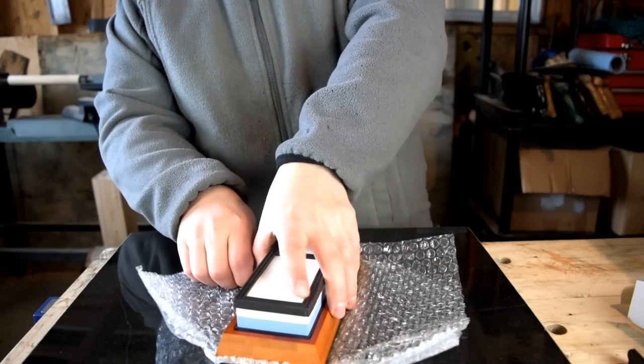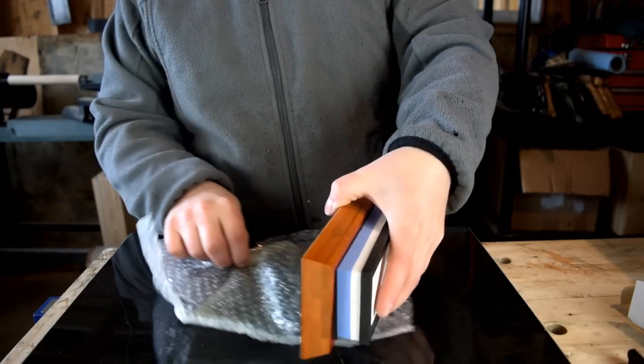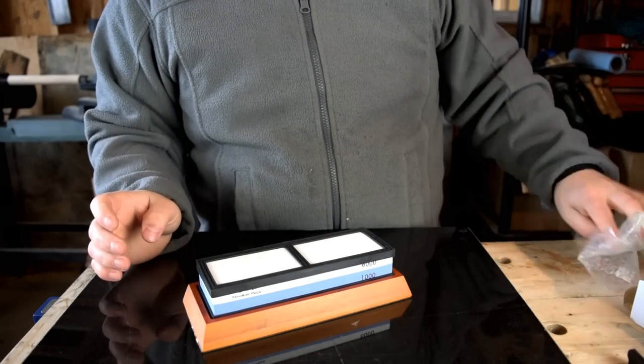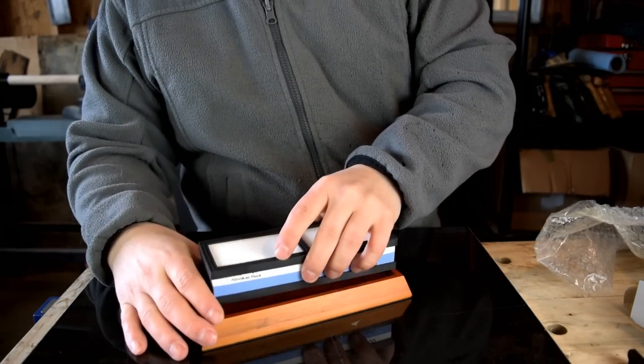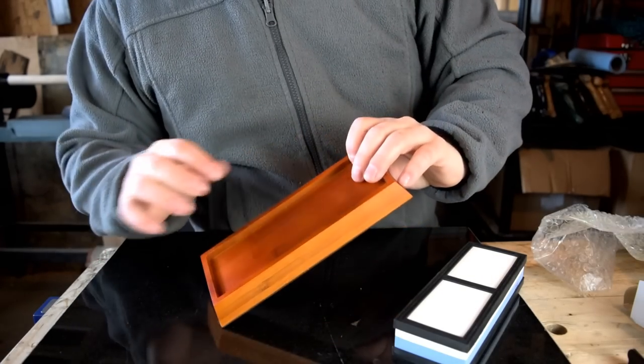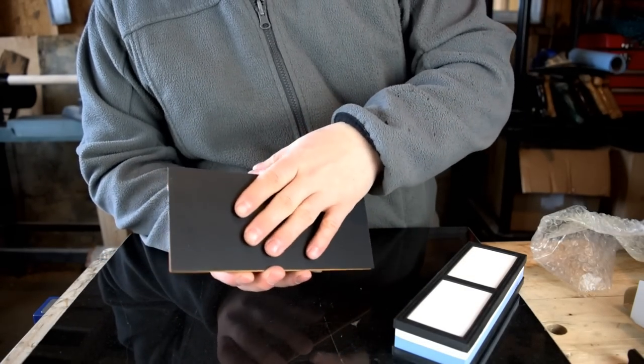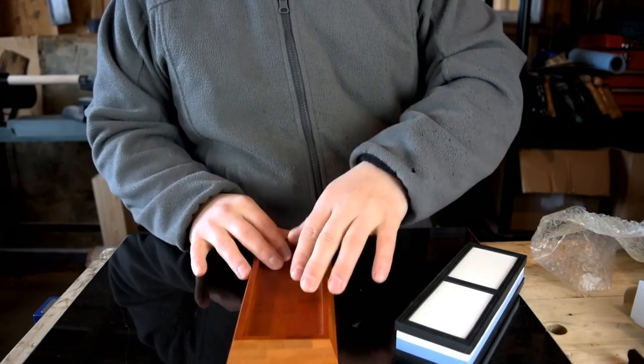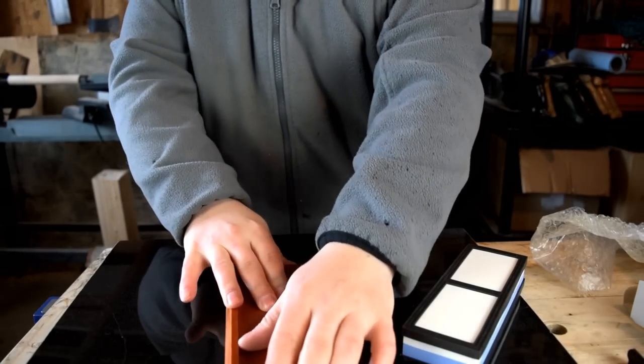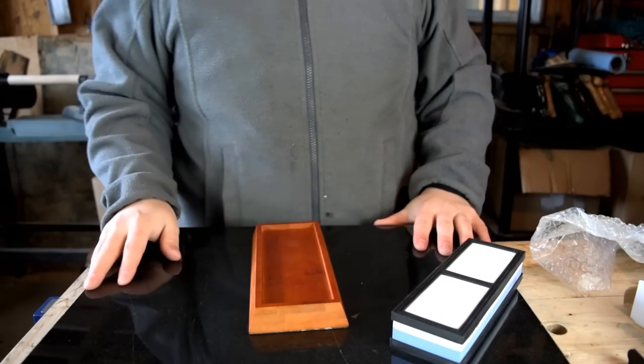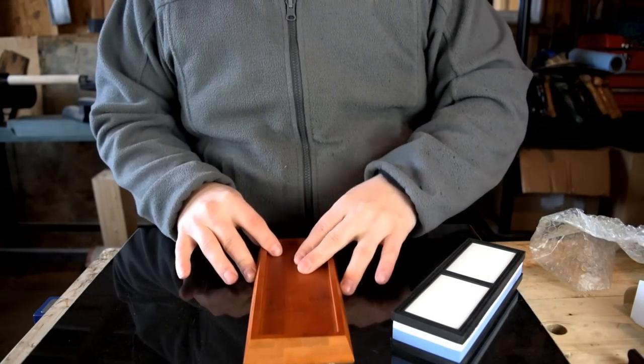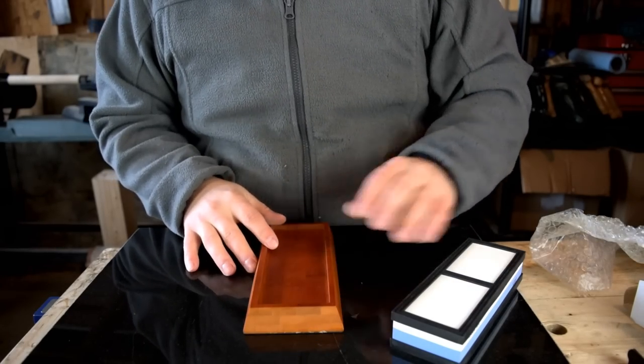And then we have of course the bread and butter here, which is your whetstone. Now this is actually really nice. It comes with this bamboo base which is really nice and solid and has a full rubber bottom. Notice I can actually slide around this huge granite slab here. Just with the stickiness, so this is definitely not going to move when you're sharpening.